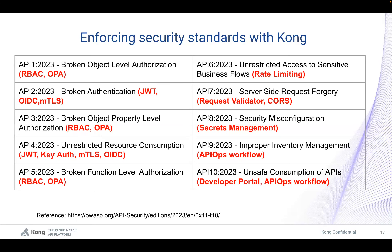Coming back to the top 10 API security risks — this is a mapping of the different Kong plugins that fulfill each use case and mitigate each risk. Things like OPA (Open Policy Agent) and JWT are already out-of-the-box targets we already have. Beyond security targets, things like rate limiting, API auth flow, and other controls are also essential elements of security to take note of.